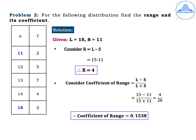Problem 2. For the following distribution, find the range and its coefficient. The X values are 11, 12, 13, 14, 15 and the corresponding frequencies are 2, 5, 7, 4 and 2. The given data is discrete data and we make use of only the X values.